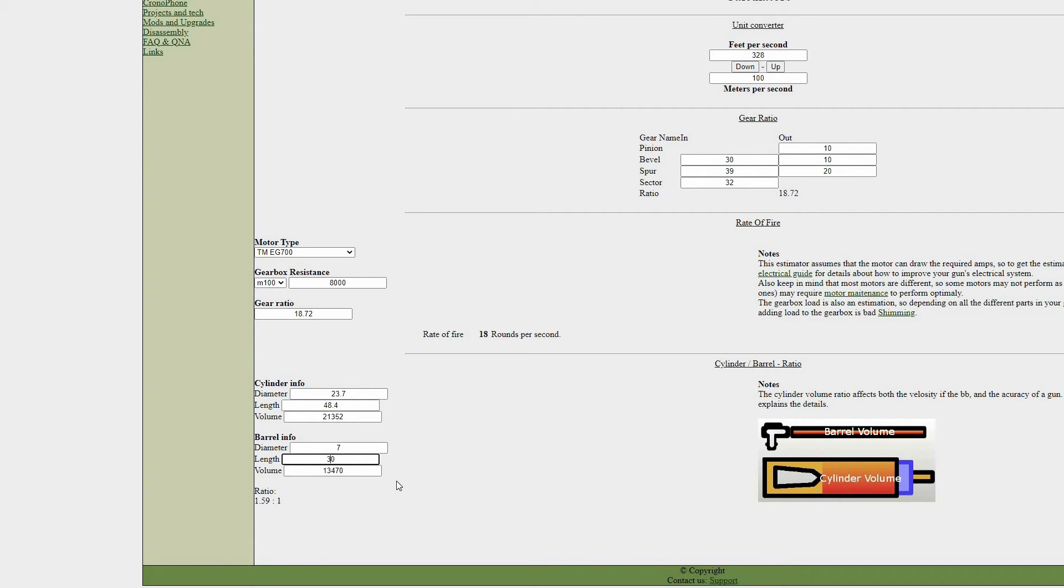To make this value even closer to what I need it to be, I can just lower the barrel length here to see what value would be best. So if I cut my barrel down to 320 mil rather than 350, you can see I get a ratio of 1.73 to 1, which is pretty spot on.